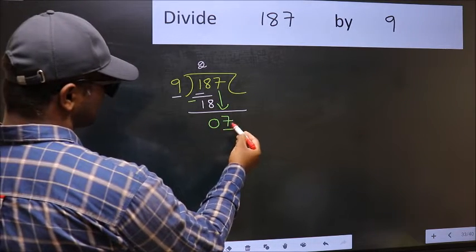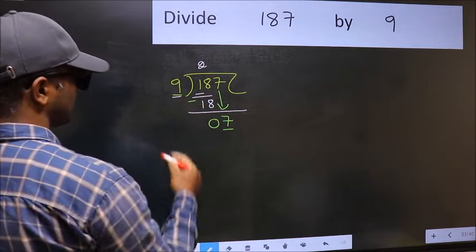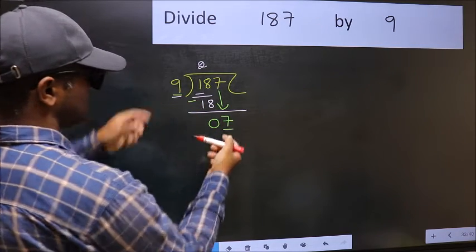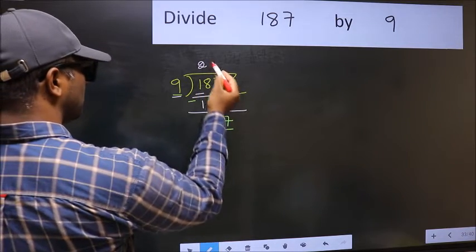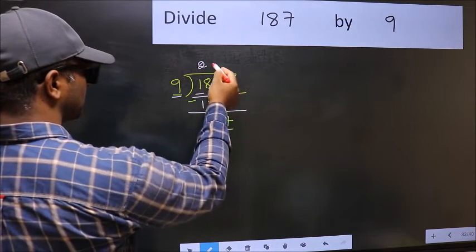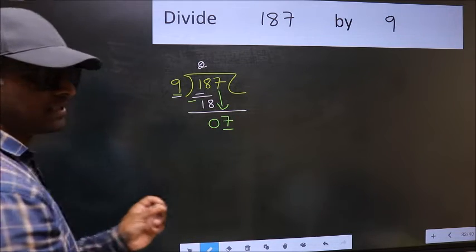Here we have 7 and here 9. 7 is smaller than 9. So, what many do is they directly put dot and take 0, which is wrong.